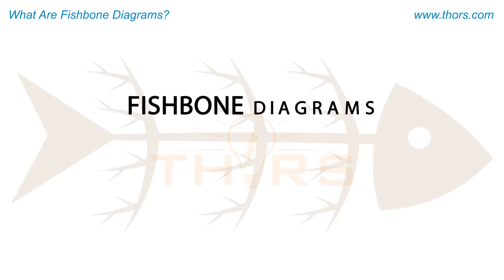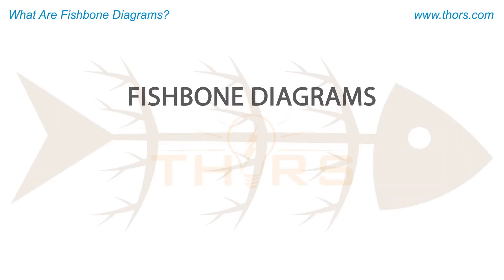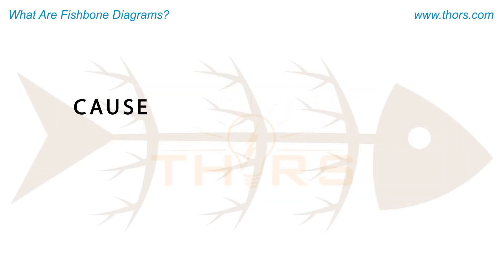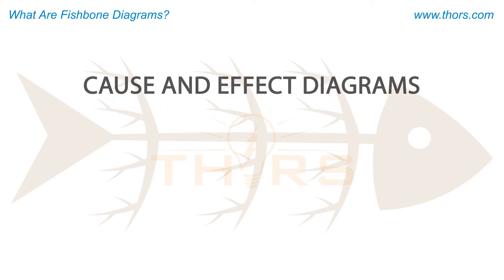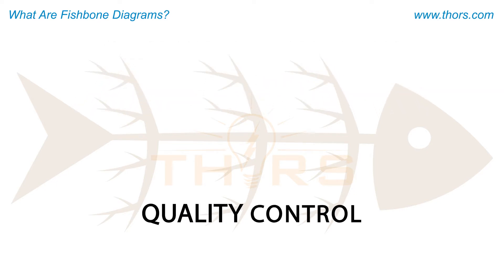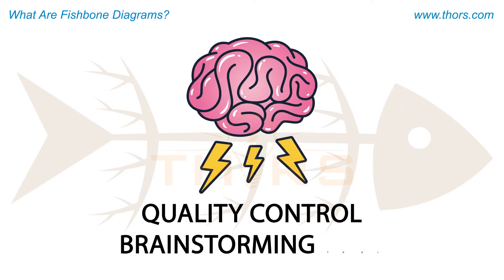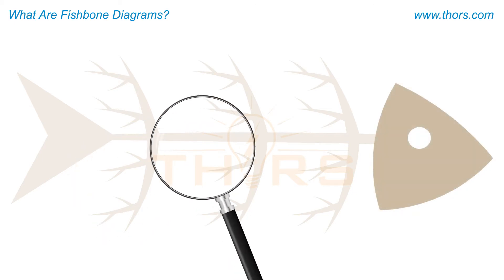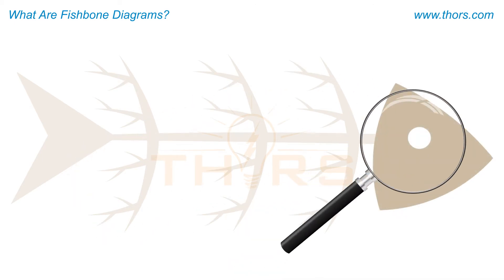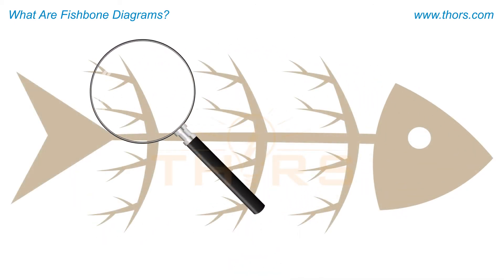Fishbone diagrams, also referred to as cause and effect diagrams, are a quality control brainstorming tool used to help identify the root cause or causes of an issue by looking at all possible variables.